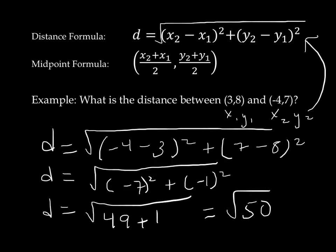Now, shortly, we will learn how to simplify radicals. So we will be able to write this square root of 50 in a different form, but right now, we will leave our answer in that form. And that gives us the distance between the two points.